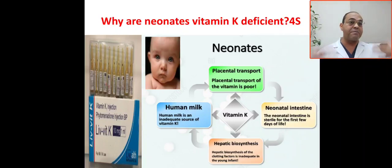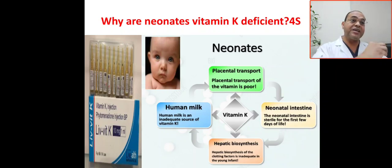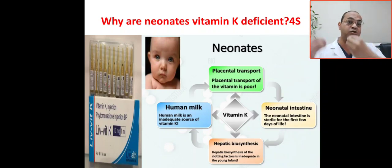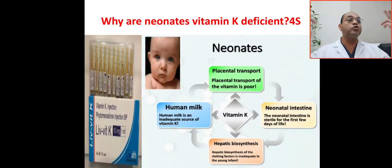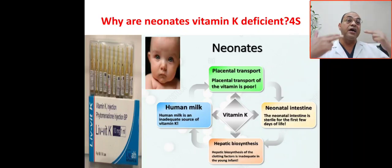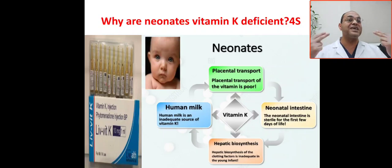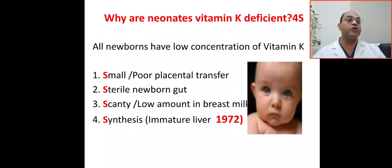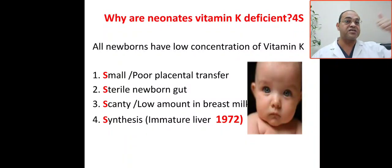In summary: the maternal cause involves drugs and the fact that human milk is an inadequate, scanty source of vitamin K. The placental transport is poor. The neonatal causes are a sterile gut and inadequate hepatic biosynthesis of clotting factors. So why is the neonate vitamin K deficient? First, small and poor placental transfer.